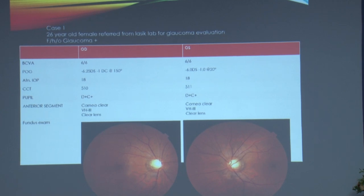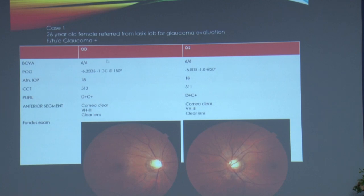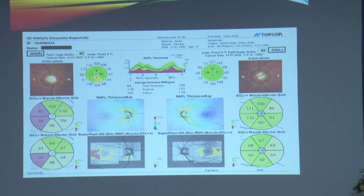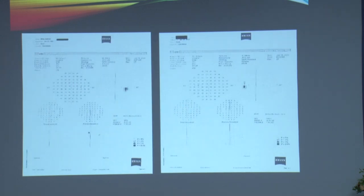Case 1: A 26-year-old female referred from a refractive lab with non-contact tonometry pressures of 20–24, confirmed at 18 on Goldmann applanation, CCT slightly low, with family history of glaucoma. The disc showed a myopic tilted disc. OCT showed inferior RNFL thinning and temporal-inferior ganglion cell thinning in both eyes — the left eye which appeared normal clinically showed ganglion cell changes on OCT. This patient needs close follow-up and counseling — the visual field will not yet show any defect.